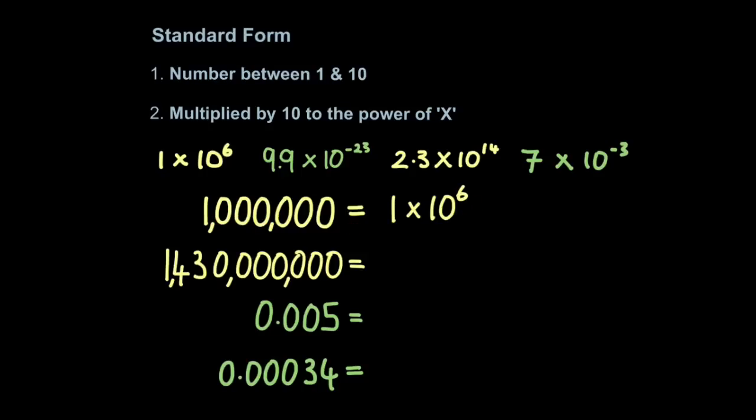If we look at a larger number like 1,430,000,000, well, then we have to write 1.43, so I've decimalised here and added the 4, 3, because remember the number has to be between 1 and 10. And then you multiply it by 10 to the power of 9.